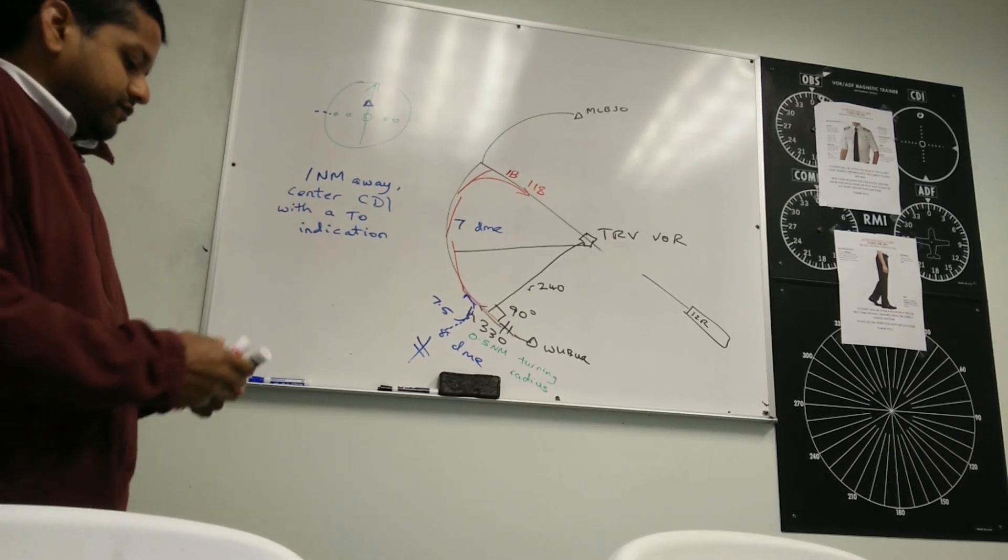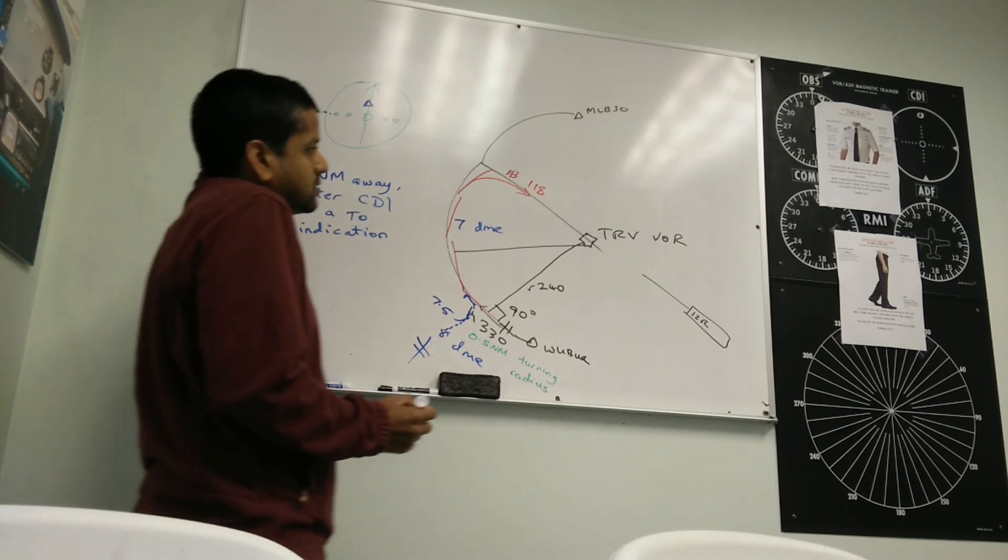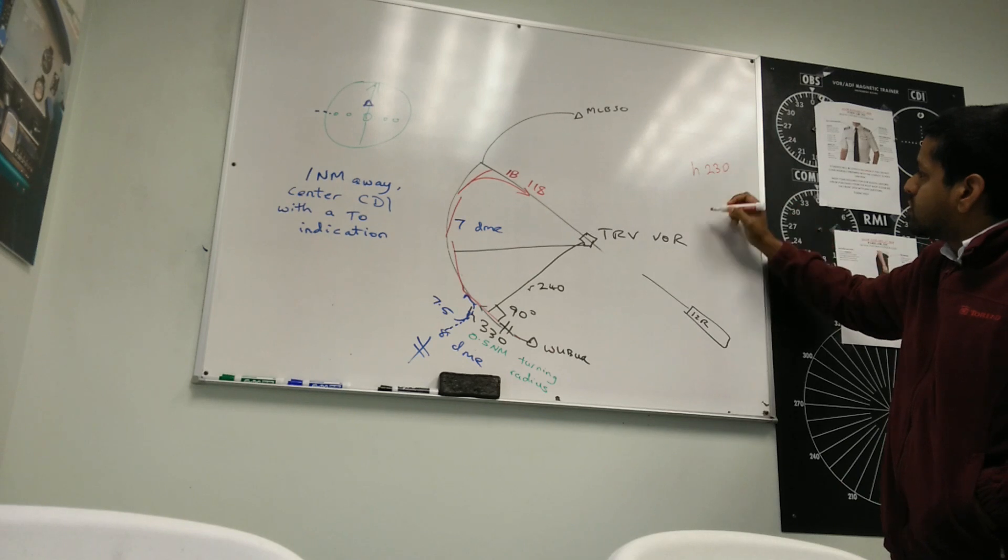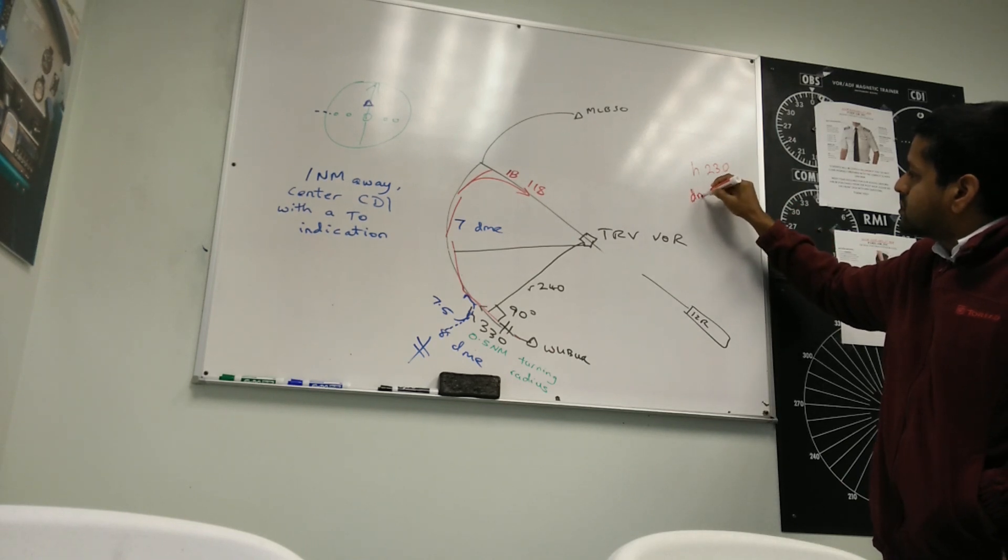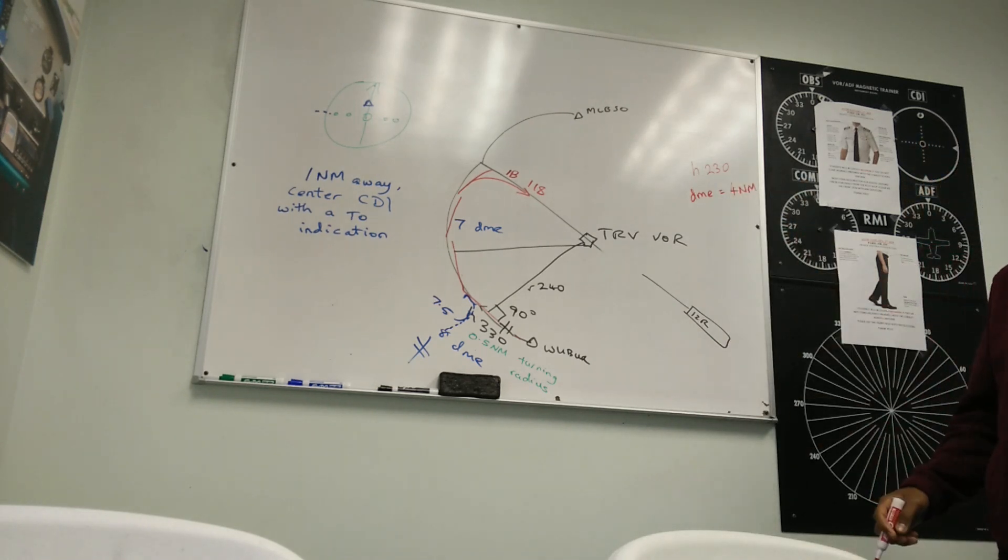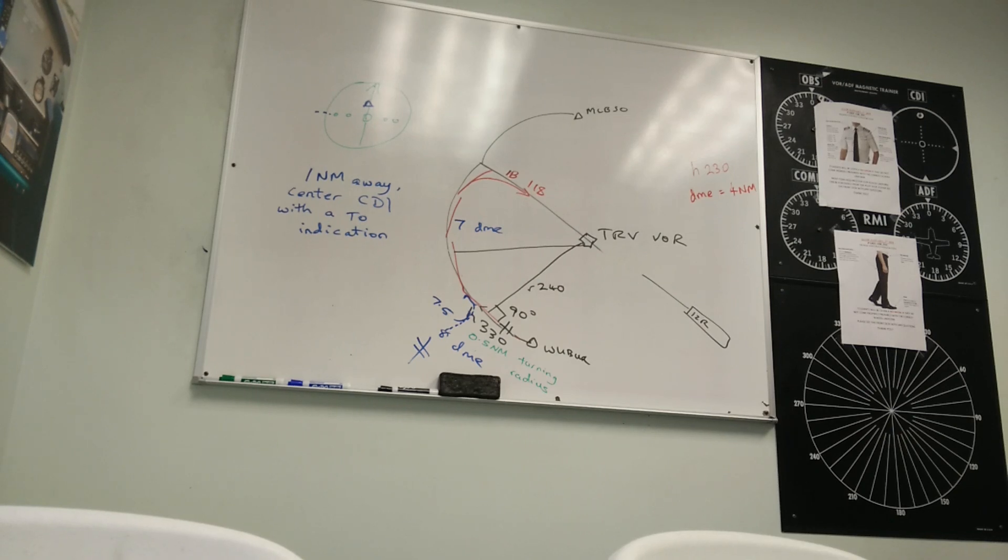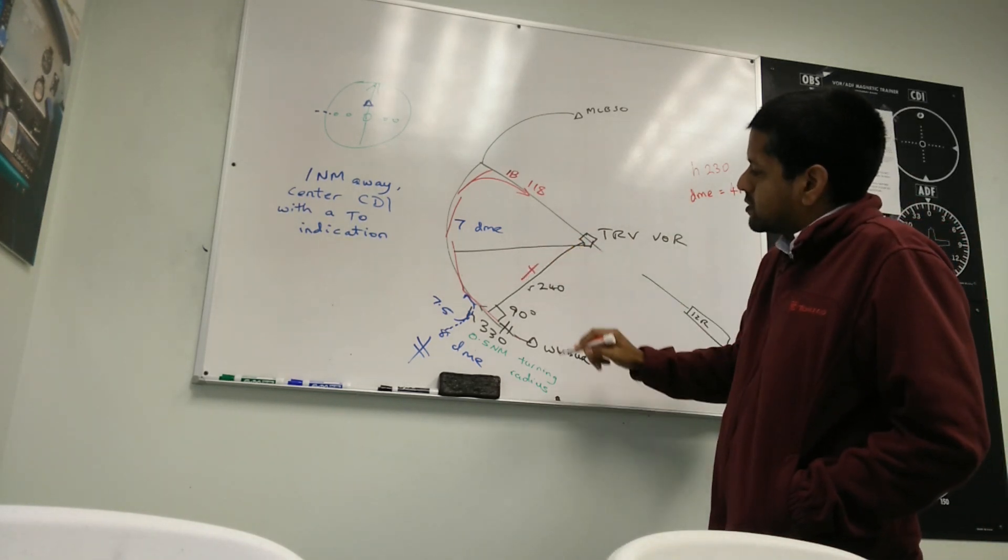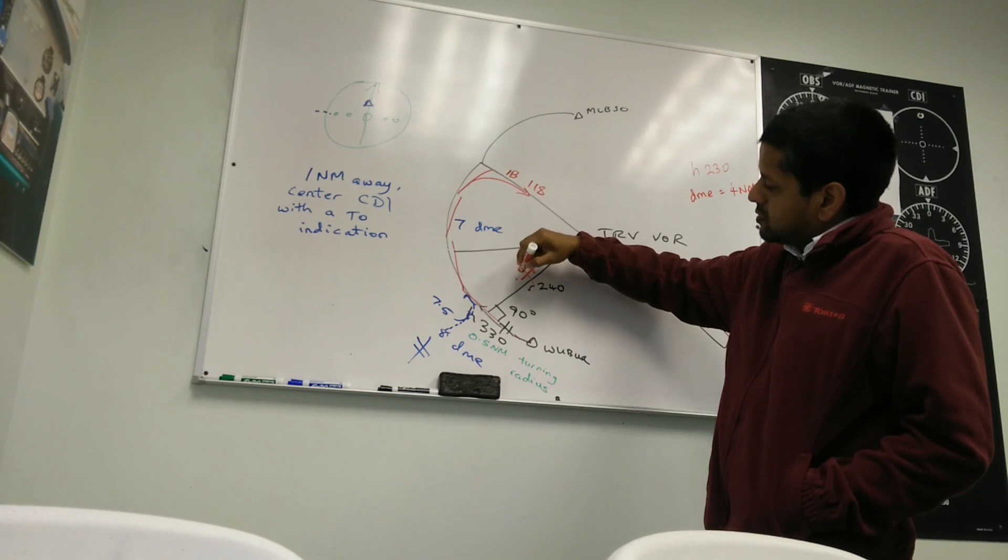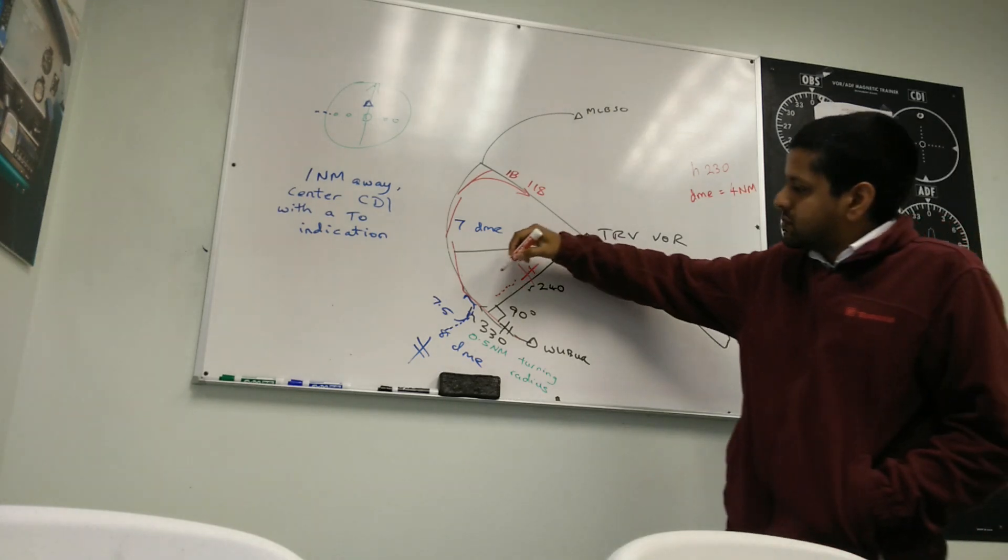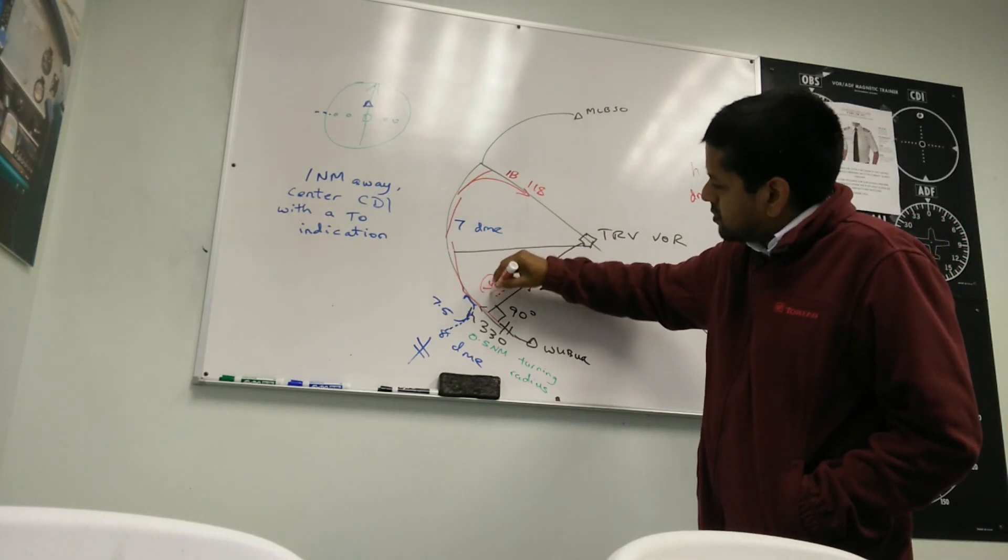What if our heading was, let's say the heading is 230 and our DME is 4 nautical miles. Are we coming from inside or from outside? Inside. We're coming from inside. And it's heading 230, so our aircraft must be flying this way. So, once again, 1 nautical mile away, which is 6 DME. And 6.5 turn, turn right.